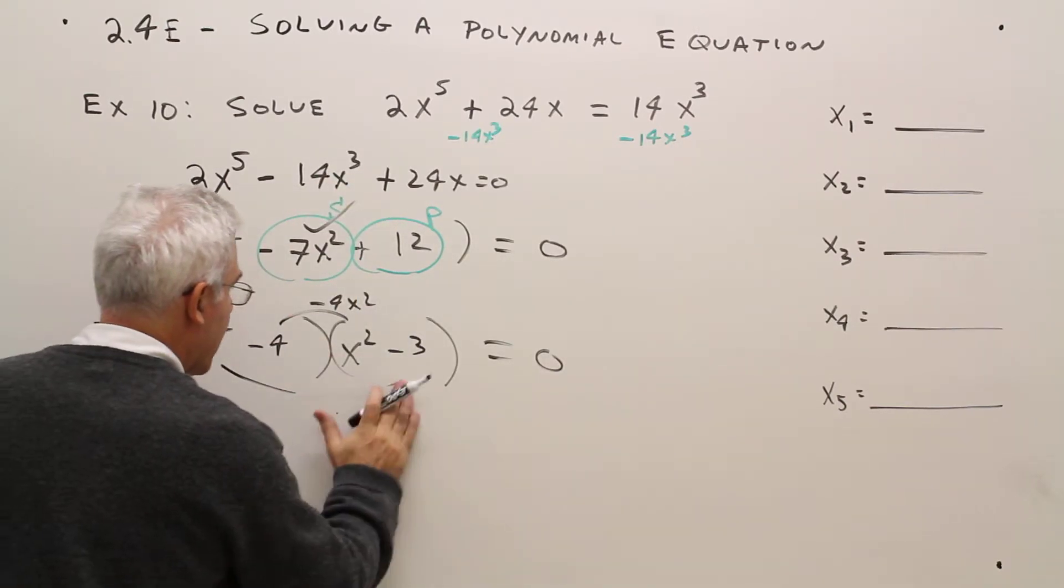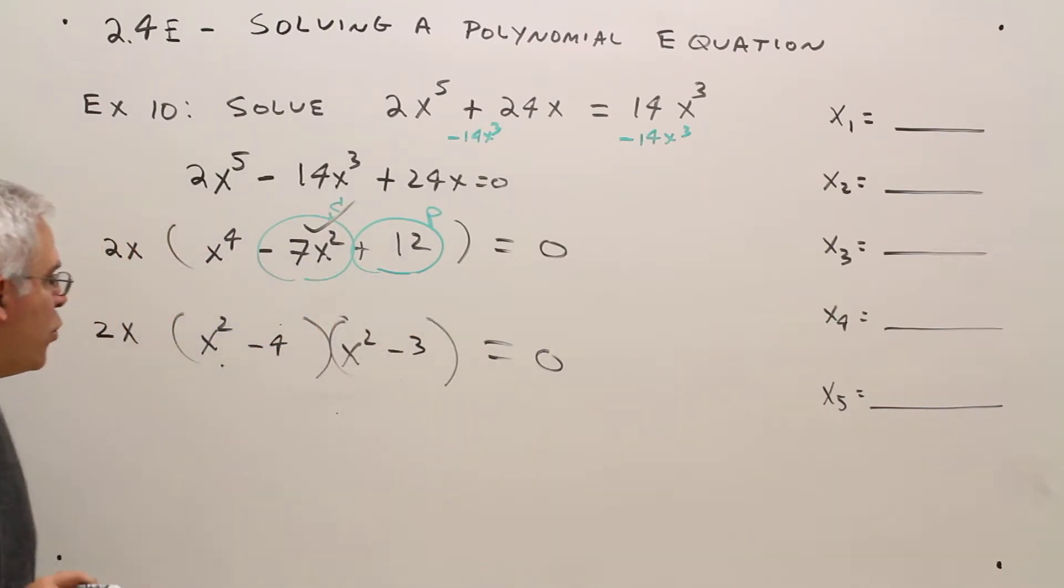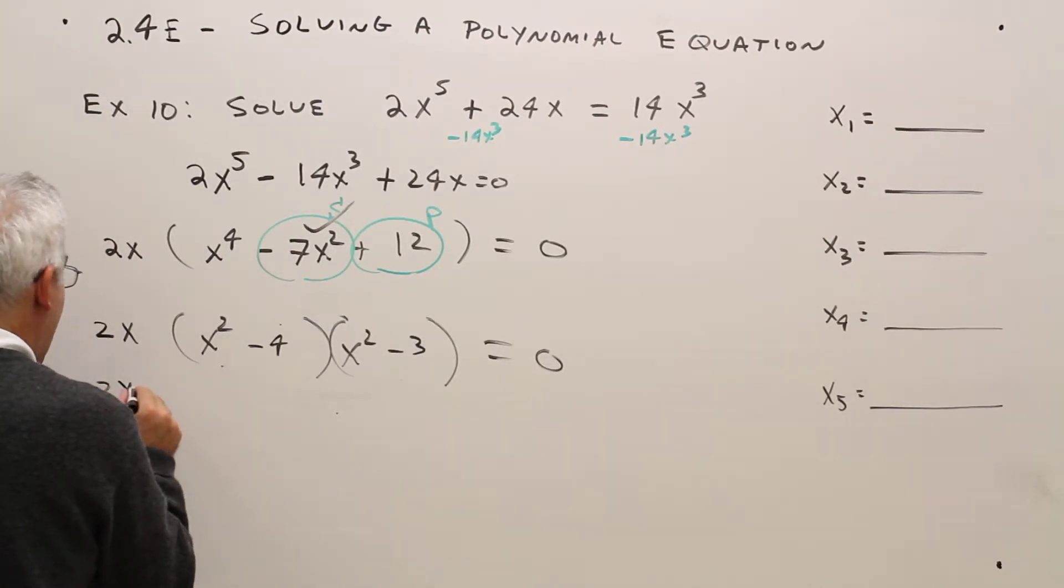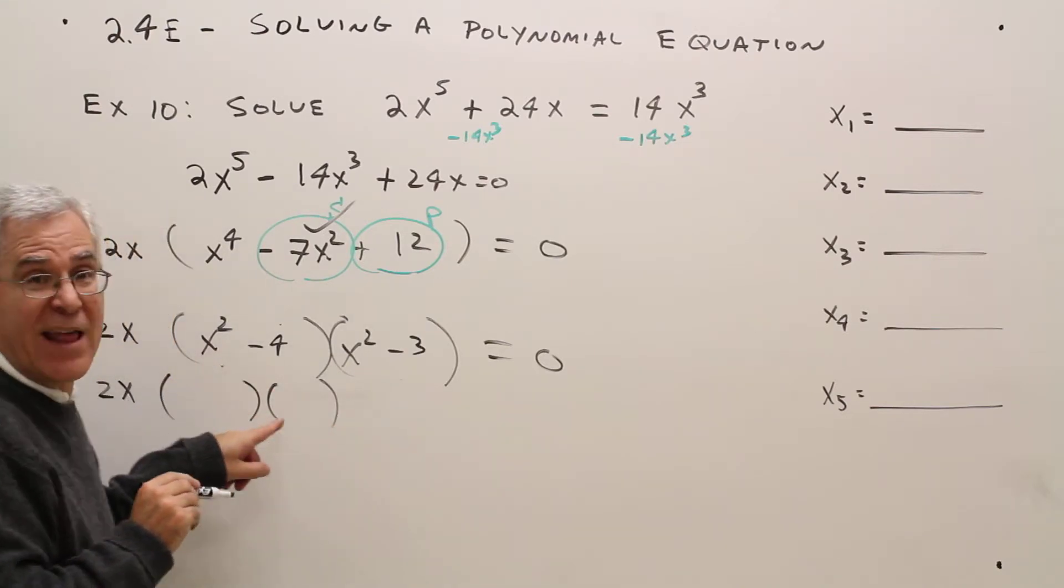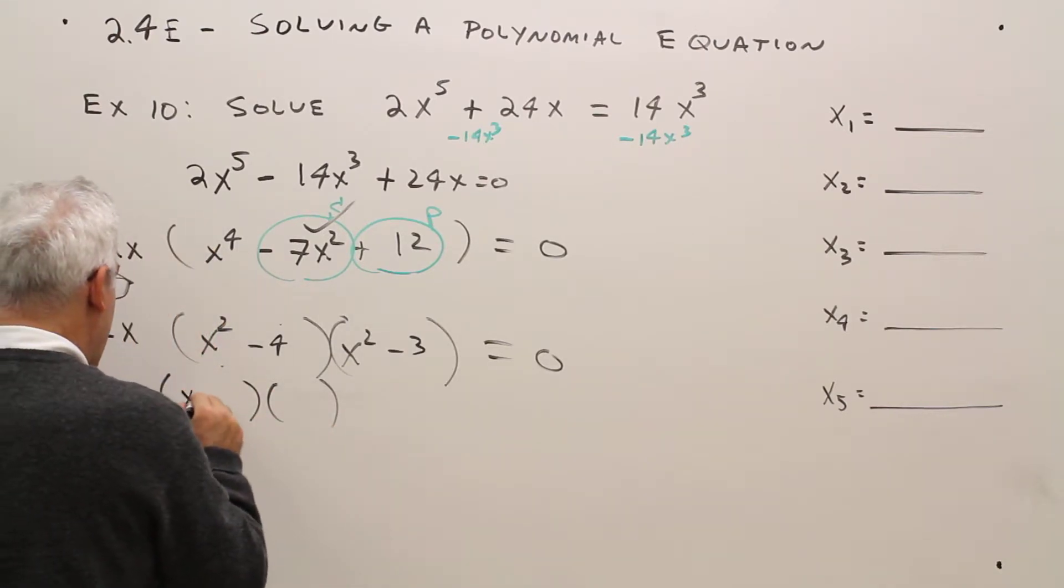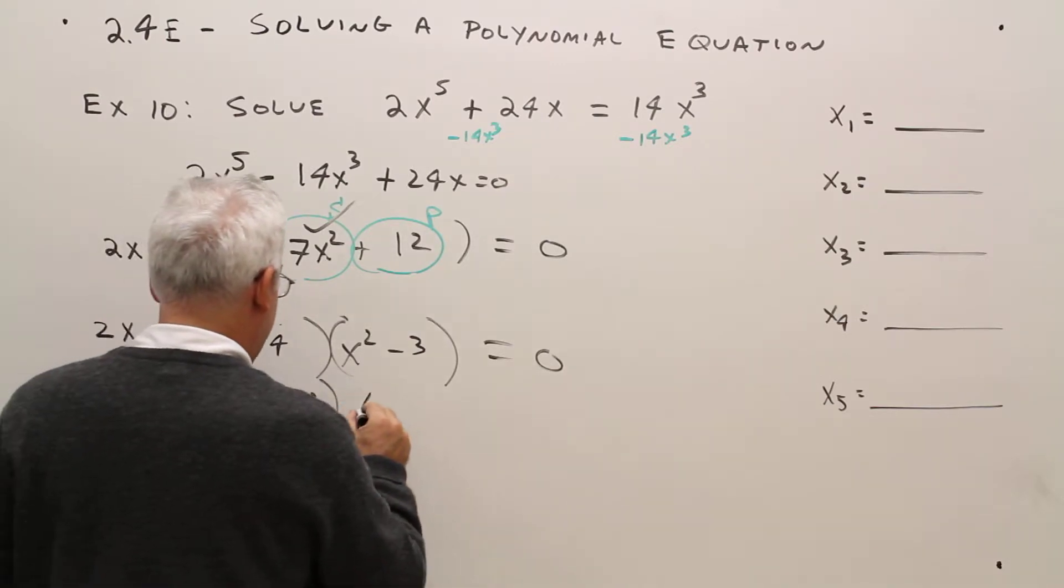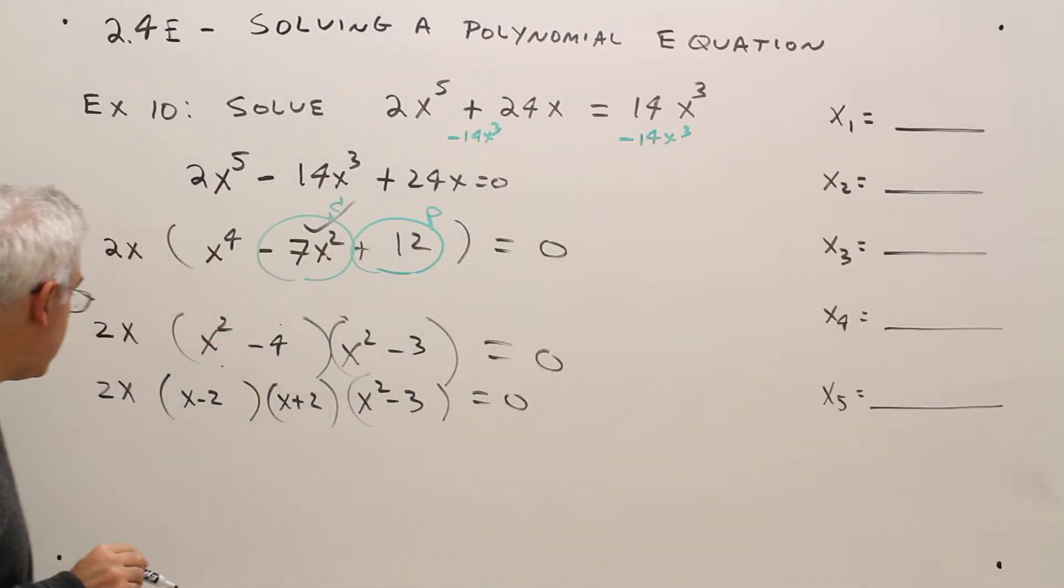I don't want to get too clustered here with writing. Oh, difference of squares. So 2x, hopefully you're okay with x minus 2 and x plus 2, x minus 2 and x plus 2. And then you're not a perfect square. So just x squared minus 3 equals zero.